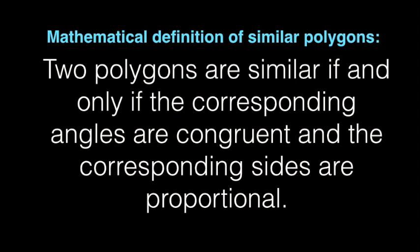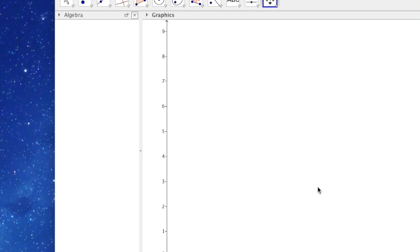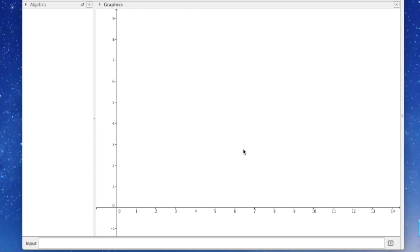Welcome back to another fun evening with your geometry teacher. Tonight we will be talking about similarity and, more specifically, similar triangles. The first place I want to start is reminding you of the mathematical definition of similar polygons: two polygons are similar if and only if the corresponding angles are congruent and the corresponding sides are proportional. You need both of those to be true. Similar, in layman's terms, means same shape, different size.